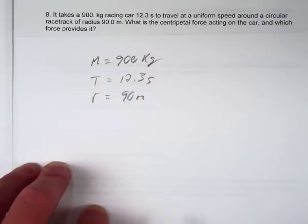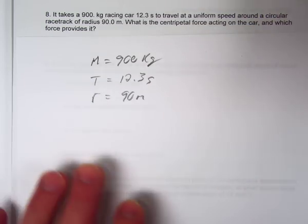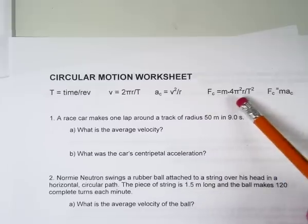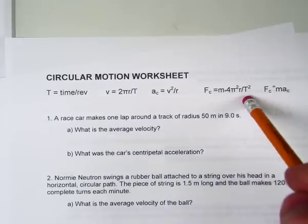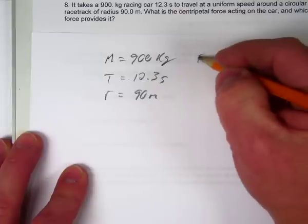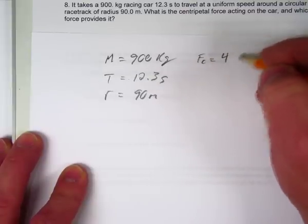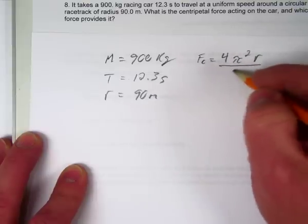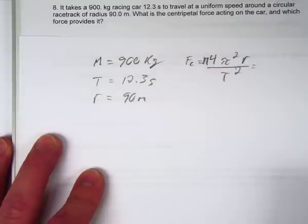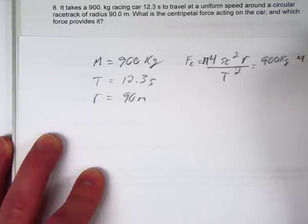For centripetal force, we use the equation: centripetal force equals mass times 4π² times r divided by T squared. Plugging in: mass is 900 kilograms, times 4 times π squared, times r which is 90 meters, divided by T squared.